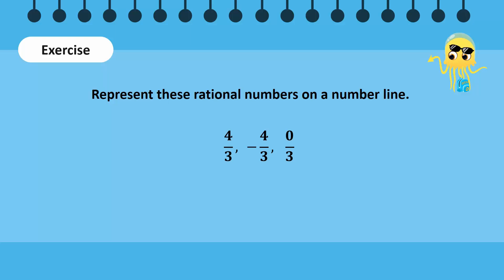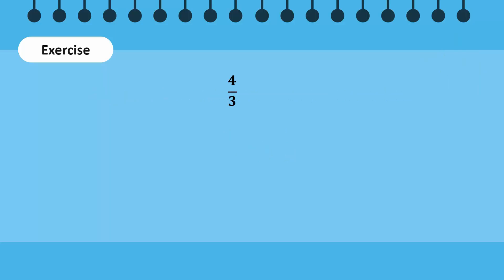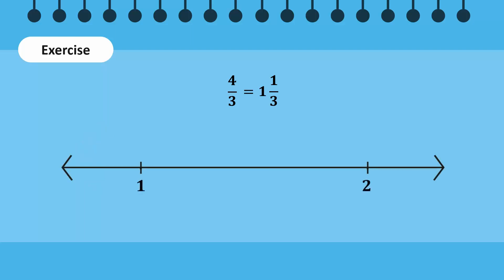Now, take a minute to represent these rational numbers on a number line. Let's find the solution together. Since the numerator 4 is greater than the denominator 3, we convert 4 over 3 into a mixed fraction. 4 over 3 is equal to one whole number 1 over 3. So, 4 over 3 lies somewhere between consecutive integers 1 and 2 on the number line. Now, divide the line segment between 1 and 2 into 3 equal parts. This number is positive, so we determine its location by moving to the right. 4 over 3 is represented by this circle.